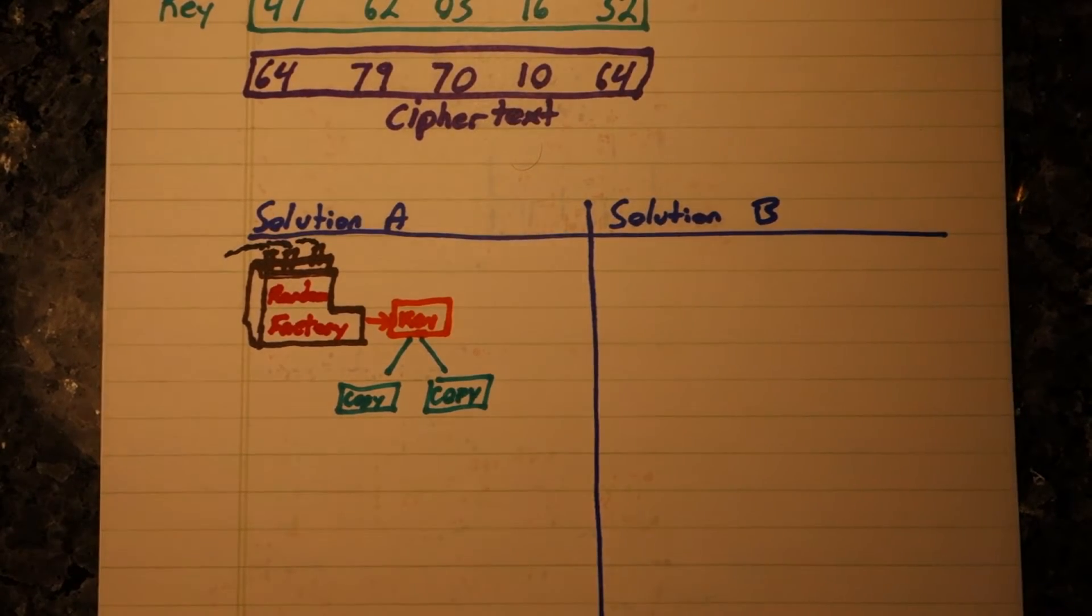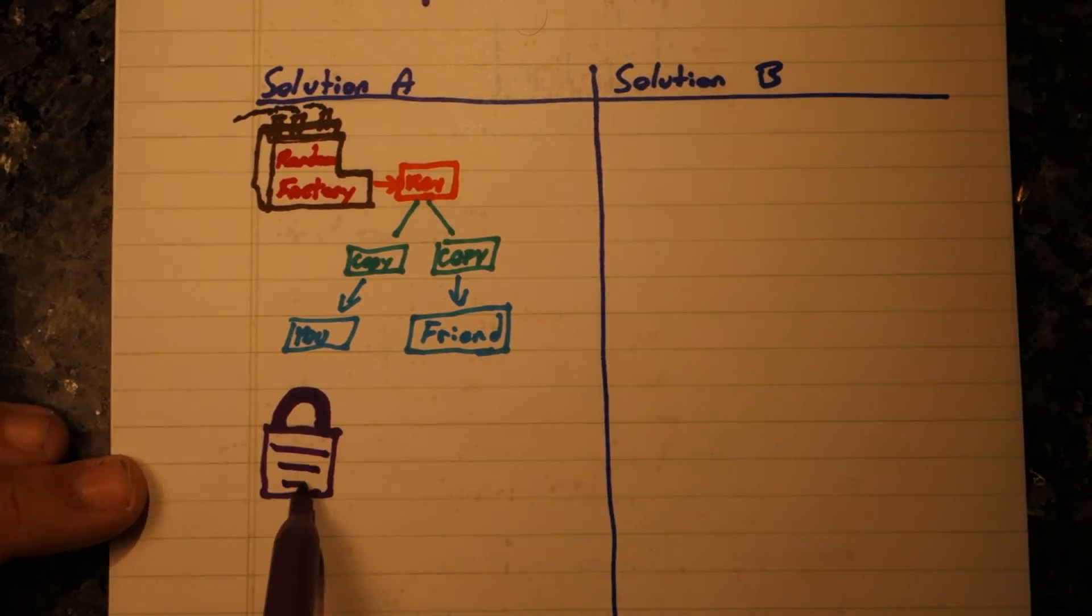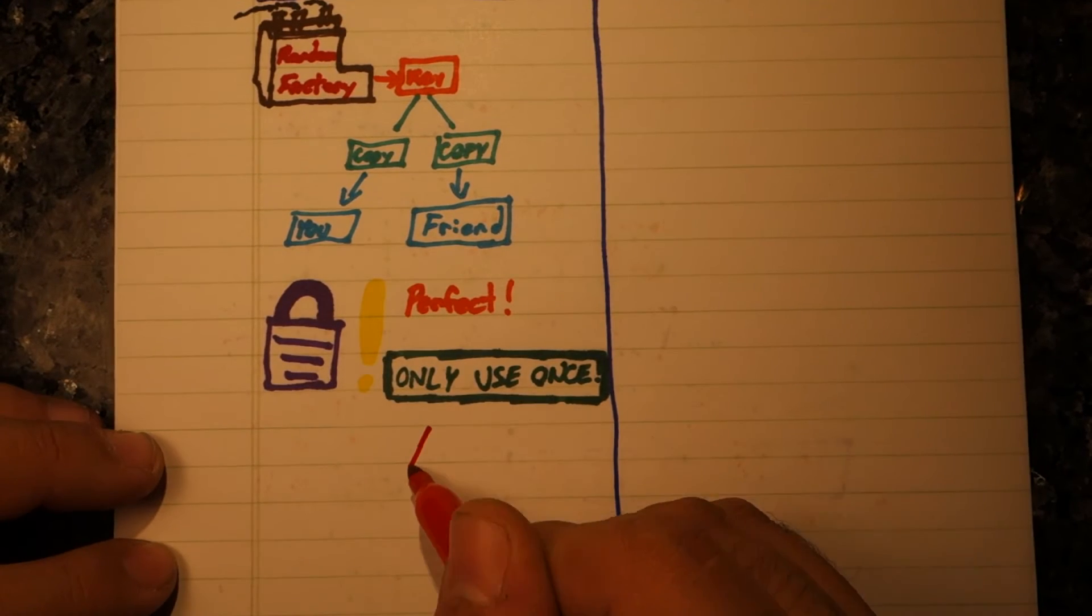Then we use those pads to encrypt our numbers. Notice that there's no way to statistically attack this, since the pad amount changes for each character, we've created perfect security.